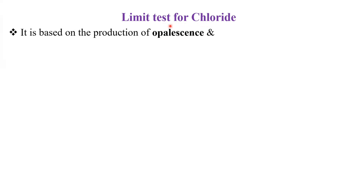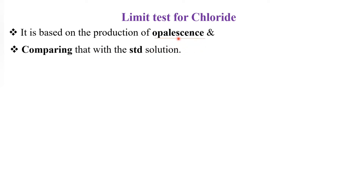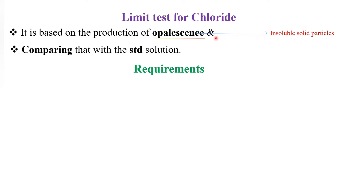Today we are going to see the limit test for chloride. We have already seen what the limit test is and its types. This limit test for chloride comes under comparative methods. It is based on the production of opalescence, and we compare the opalescence of the sample with the opalescence of the standard solution. Insoluble solid particles are referred to as opalescence.